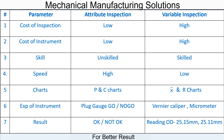Let's see a comparison between attribute inspection and variable inspection. The cost of inspection for attribute inspection is very low, while variable inspection is high because the instruments are very precise and the cost is also very high. An unskilled person is enough for attribute inspection — with basic training they can confirm any part by checking go/no-go plug gauges. A skilled person is required for variable inspection.